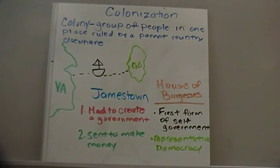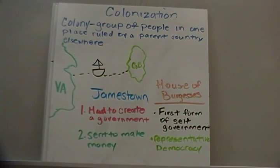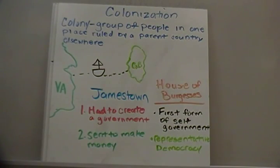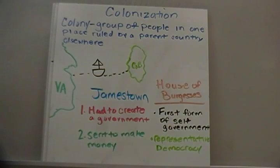Now there are two important items about Jamestown: they had to create a government, and they were sent over here to make money. The government they created was called the House of Burgesses — the first form of self-government in the colonies. This was a representative democracy. As Jamestown became successful, more and more people came in, so they started to have people represent individuals in government. A group of people representing the will of others who elect them to a specified position — that is representative democracy.